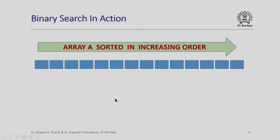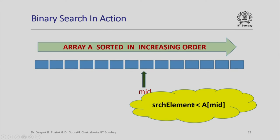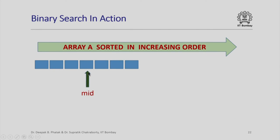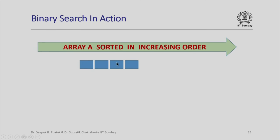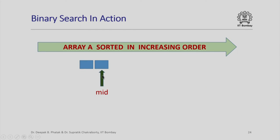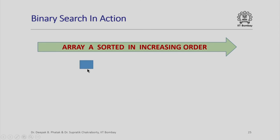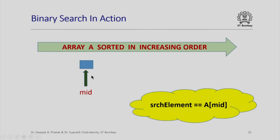Here is a simple animation of binary search in action. We have an array a sorted in increasing order. If the search element is less than the value at the midpoint, the entire second half is eliminated, leaving only the first half. We find the new midpoint; if the search element is greater than a[mid], the first half is eliminated. We keep halving the search space until in one step, we find only one element remaining, and the search element equals the value at that position — we are done.